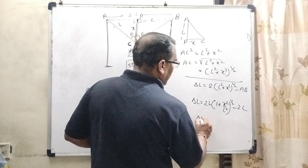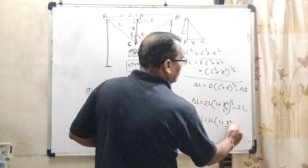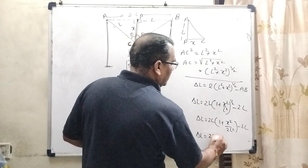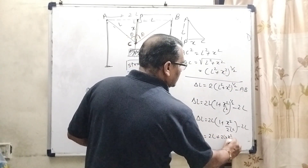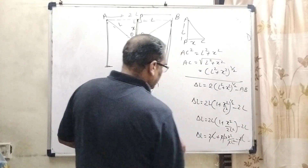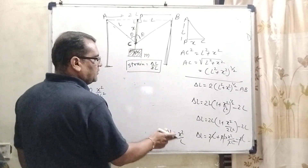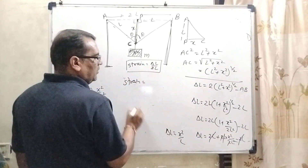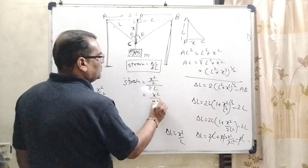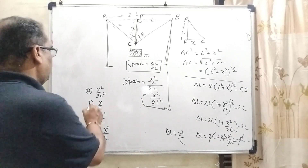Applying this concept: ΔL = 2L · (1 + X²/(2L²)) − 2L. Expanding: 2L + X²/L − 2L. The 2L terms cancel out, giving ΔL = X²/L. Now substituting into the strain formula: strain = ΔL / (2L) = (X²/L) / (2L) = X² / (2L²). Looking at the options, X² / (2L²) matches option A, which is the correct answer.